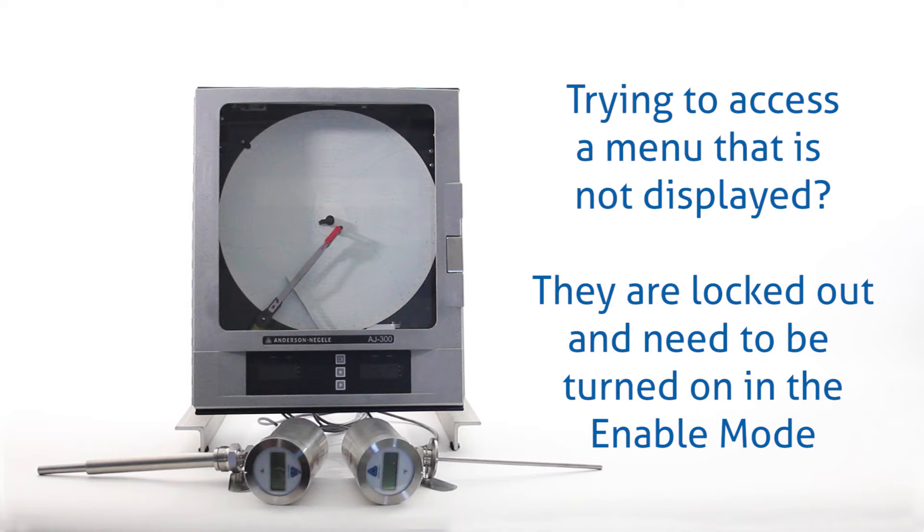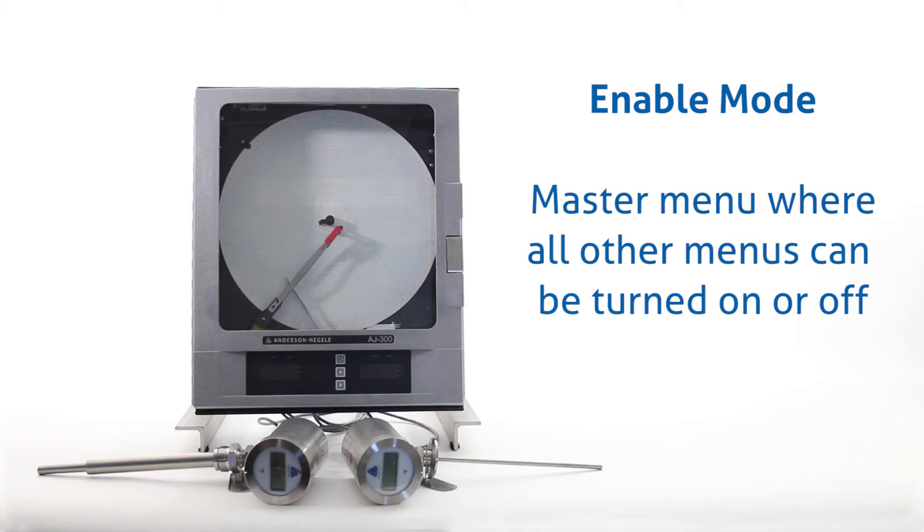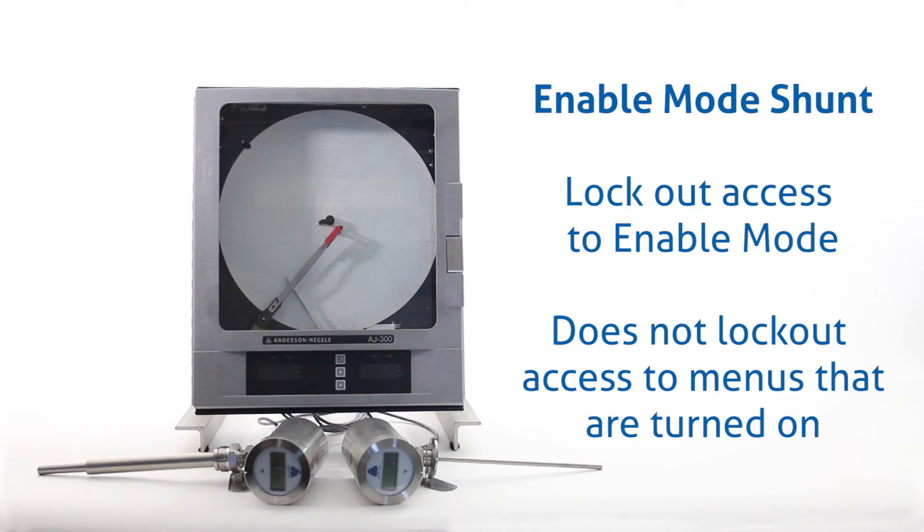If you're trying to access menus and you're not seeing them show up on the display, most likely they are locked out and you will have to go into the enable mode to turn them on. The enable mode is a master menu where all other menus can be turned on or off. The enable mode shunt allows you to lock out access to the enable mode. It does not lock out menus that are already enabled or turned on.